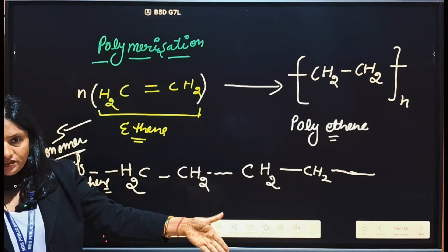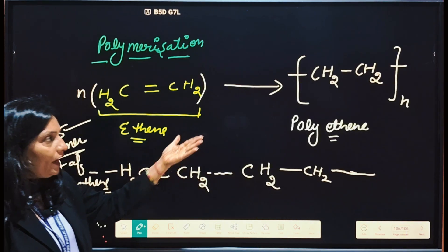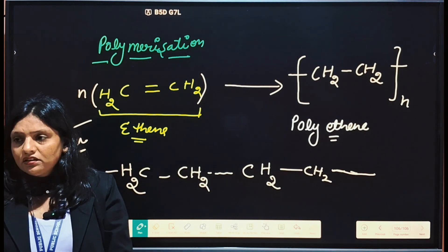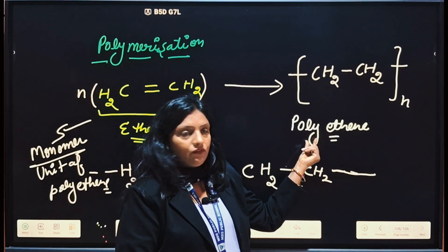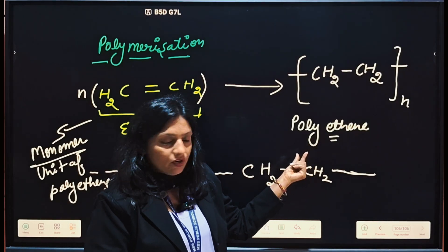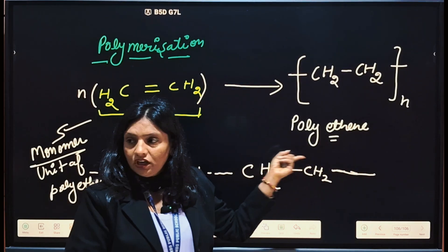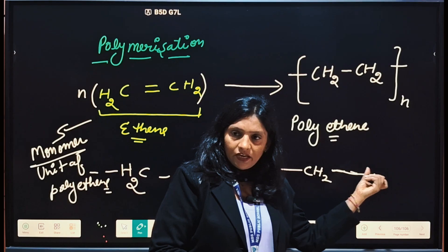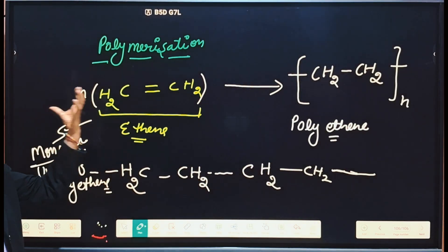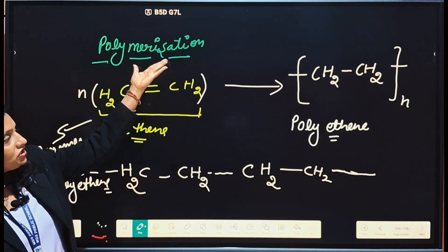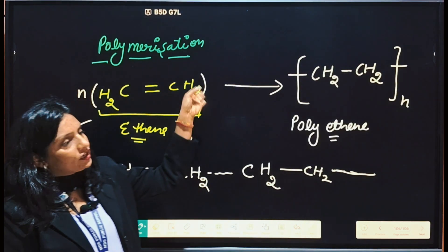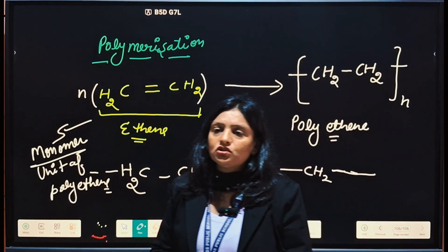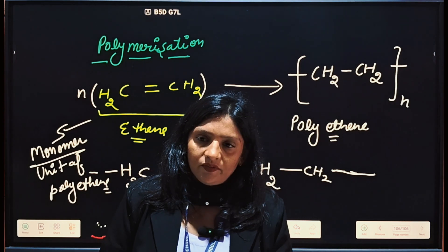When N molecules of ethene combine and link with each other, they form a macromolecule. Many molecules are used, so we use the word poly — polyethene. Polymerization means when a number of monomer units combine with each other and give us a macromolecule, then that type of reaction is known as polymerization.